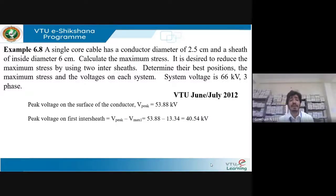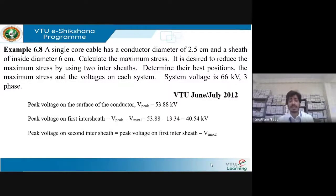The peak voltage on the first inter-sheet = V_peak − V_max1 = 53.88 − 13.34 = 40.54 kV. The peak voltage on the second inter-sheet = peak voltage on first inter-sheet − V_max2 = 40.54 − 17.86 = 22.68 kV.